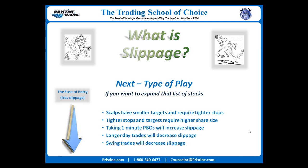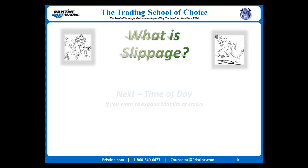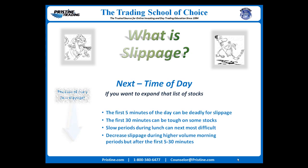When taking long-term positions such as swing or core trades, slippage is generally not an issue at all. The time of day you enter trades makes a big difference also. While the early part of the day has very good volume, the first 5 to 30 minutes can be deadly for slippage because there are wider spreads and the volatility is so great that normal rules are sometimes not enforced. At the other extreme are very slow periods like the lunchtime doldrums that can cause lower volume and wider spreads, which also can cause greater slippage.